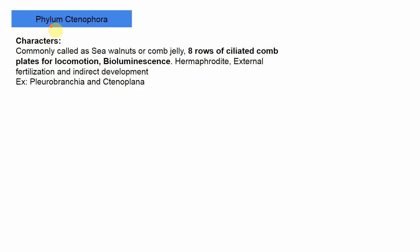The next phylum is Ctenophora, commonly called sea walnuts or comb jellies. The most unique character is the presence of eight rows of ciliated comb plates, mainly meant for locomotion. They also exhibit bioluminescence — the ability to produce light. They are hermaphrodite, with external fertilization and indirect development. Examples are Pleurobrachia and Ctenoplana.